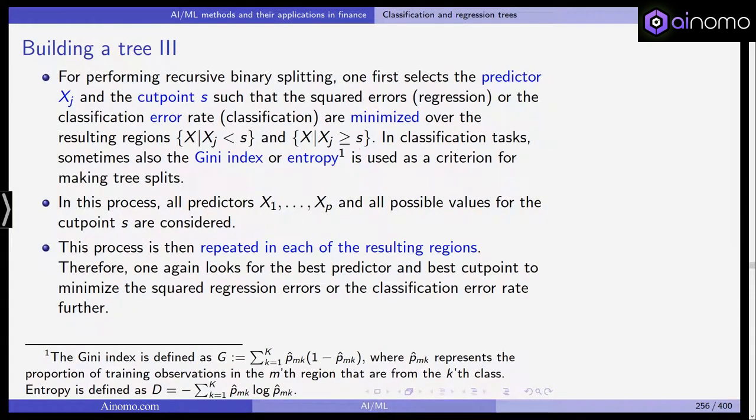If you for example say okay let's start out with age here and consider smoking here, if smoking gives you the best result here then you start out with smoking and you don't consider the full tree. And this is why it's greedy. Okay now for performing recursive binary splitting you first select the predictor xj and the cut off or the cut point s such that the squared errors in regression or the classification error rate in classification are minimized over the resulting regions x given that xj is smaller than s and x given that xj is larger or equal than s.